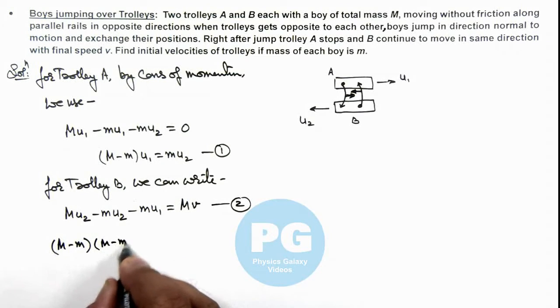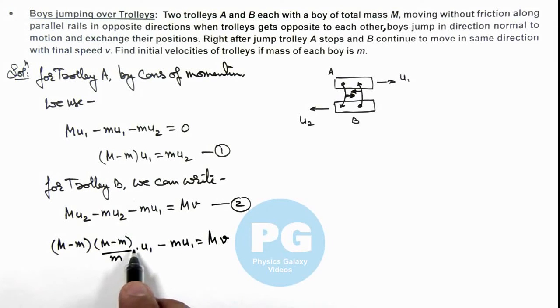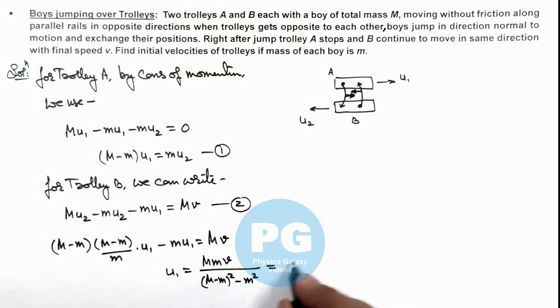Minus m·u1 is capital M·v. So on simplifying this, we are getting the value of u1 is equal to M·m·v divided by (M-m) whole square minus m square, which on further simplifying we get M·v divided by (M-2m). That is one answer for this problem, the velocity of trolley A before jump.